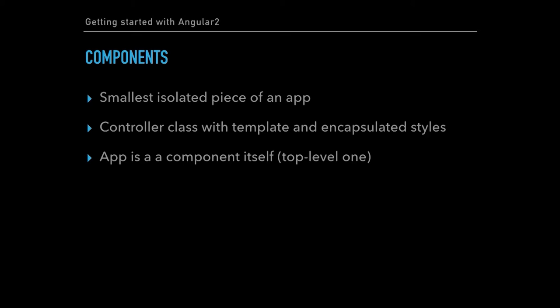The cornerstone of Angular 2 is a component. It's not exactly what components we will wait for to be supported natively by browsers, but the idea is pretty much the same. We can say this is the smallest isolated piece of application — the quantum of Angular 2. Technically, this is a controller class with its own template and encapsulated styles. Encapsulated means this style will not affect the rest of the application, and this is an amazing feature. It's possible because Angular 2 can emulate Shadow DOM, which is one of four parts of the upcoming web components standard.